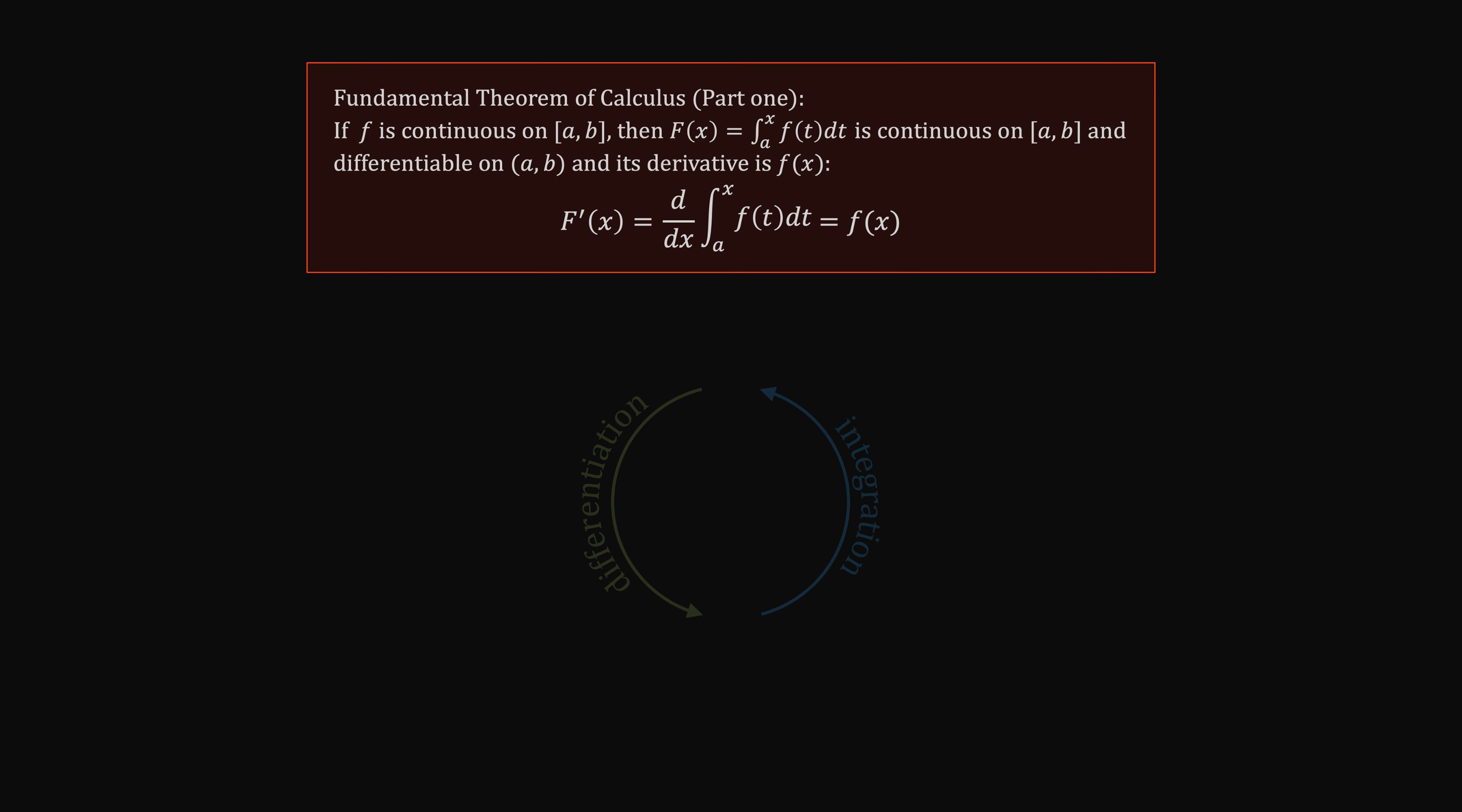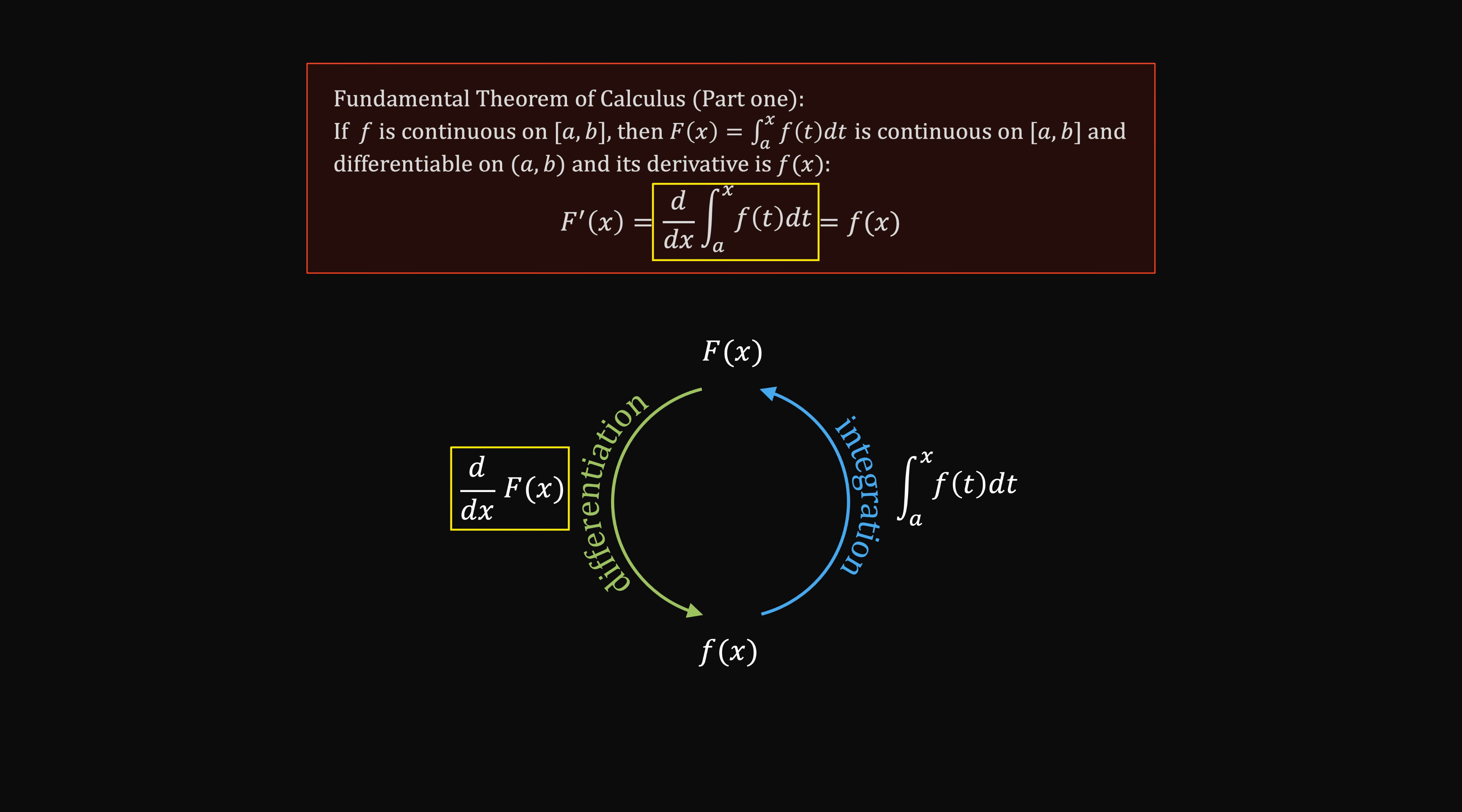Now let's take a look at the theorem. Part 1 is reinforcing that it's a full circle. If you know the relationship of the change, you use integration to patch back the relationship. Then if you differentiate this patched relationship, you will get back the velocity.